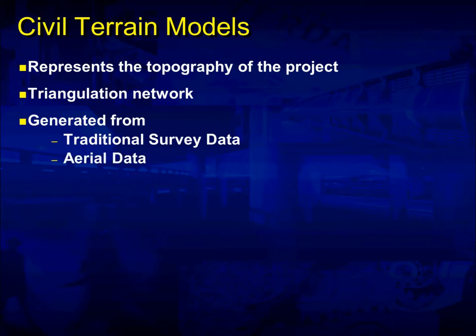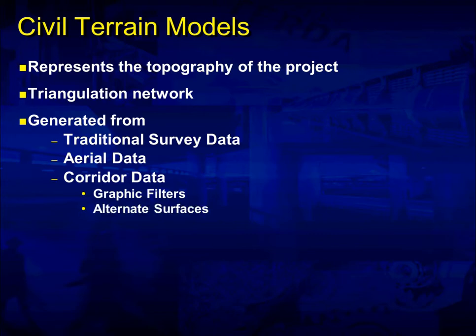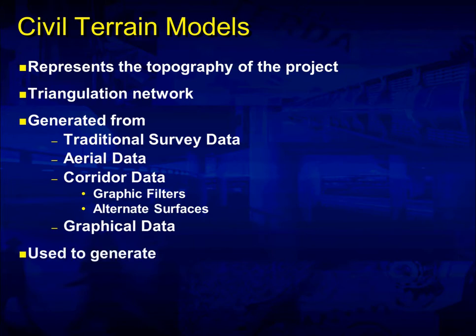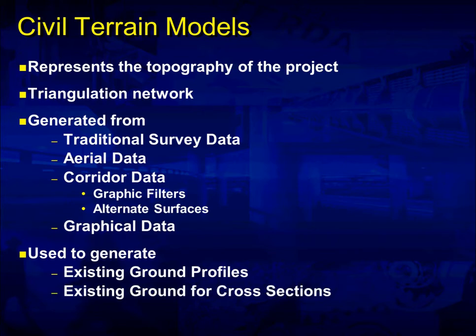Aerial data, and this includes LiDAR. Corridor data — you can create a terrain model from your corridors that you create in Roadway Designer through a graphic filter or a more traditional alternate surface that's been around since the SS2 series. You can also create terrain models from just graphical data where you select the information with a MicroStation selection set. Typically you use the terrain model for things such as existing ground profiles and existing ground cross sections, but there can be many more reasons to use terrain models.